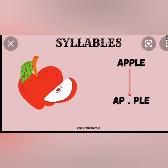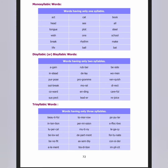A syllable is a unit of pronunciation. When you pronounce a word it splits — for example, 'apple' is divided into two syllables. One unit consists of a vowel. If a word has one syllable it is called monosyllabic. Examples of one-syllable words: act, cat, book.